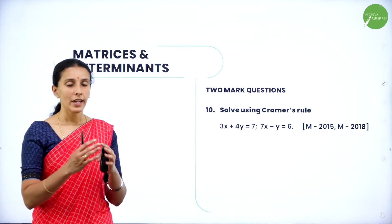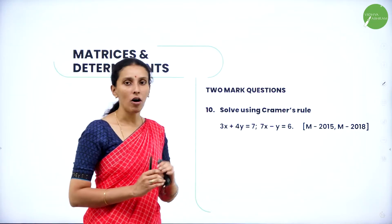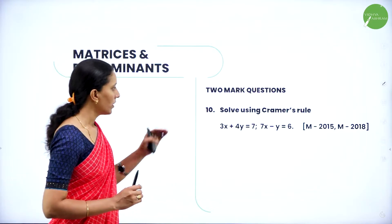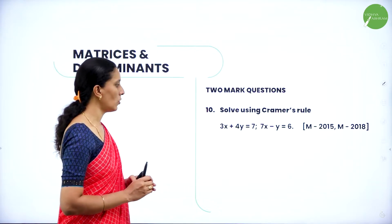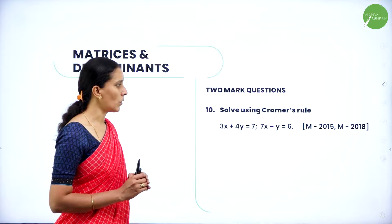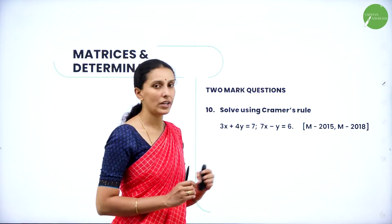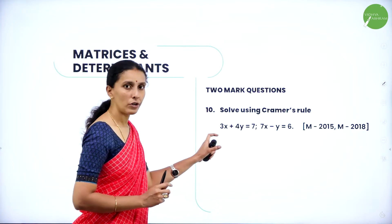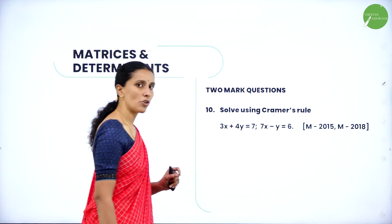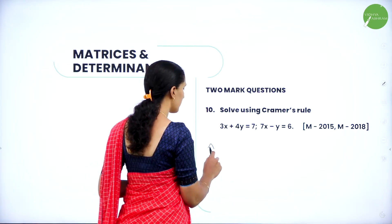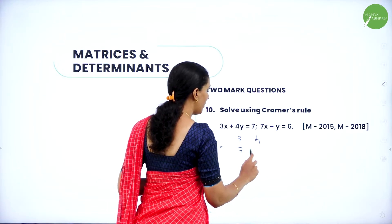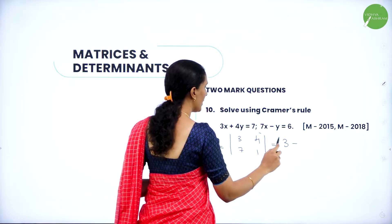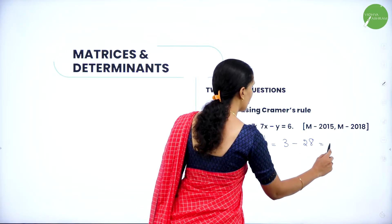Now we move to two-mark questions. You can expect more on Cramer's rule — solving linear equations by Cramer's rule arises for two marks. Solve using Cramer's rule: 3x + 4y = 7 and 7x - y = 6. Asked in March 2015 and 2018. For Cramer's rule, write the coefficients of x and y as delta: [3, 4; 7, -1]. Delta = 3×(-1) minus 7×4 = -3 minus 28 = -25.